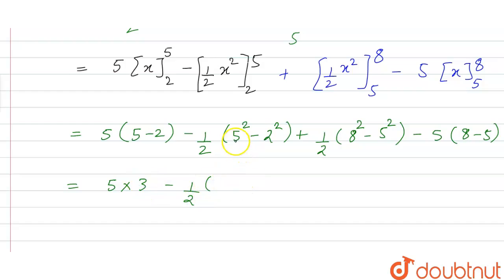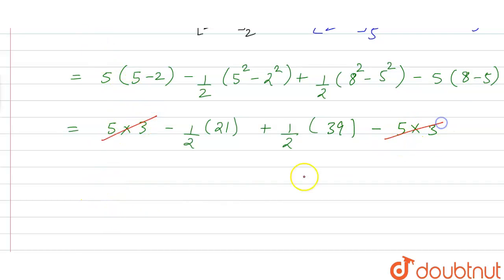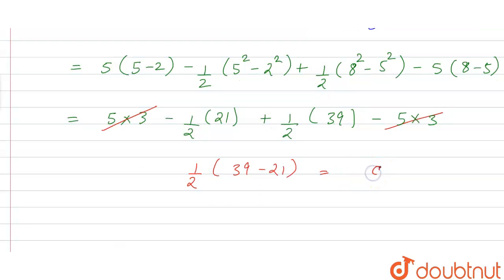So 5 into (5 minus 2) is 3, minus 1/2 into (25 minus 4) which is 21, plus 1/2 into (64 minus 25) which is 39, minus 5 into (8 minus 5) which is 3. The terms 5 times 3 cancel out, leaving 1/2 common with (39 minus 21). So the answer is equal to 9.